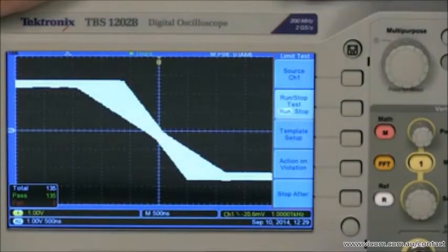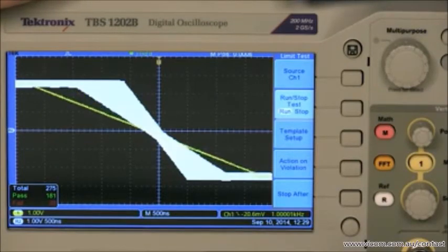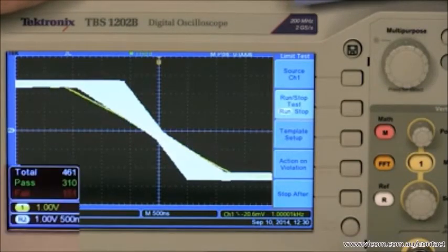When the test is running, the oscilloscope automatically monitors the source signal, evaluates whether or not the acquired waveform falls within the predefined boundary, and outputs a pass or fail result.